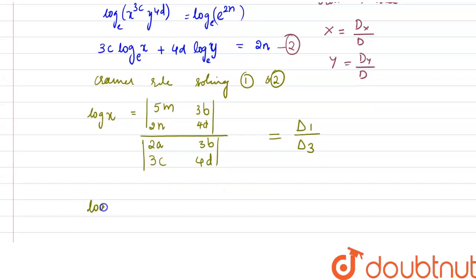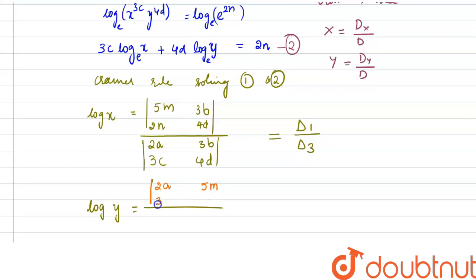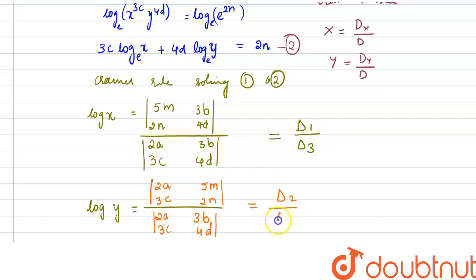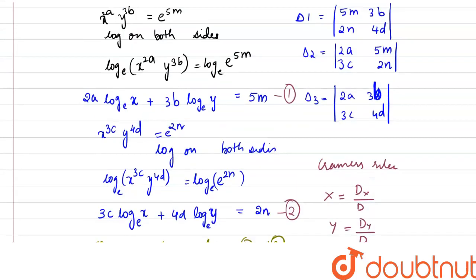Applying Cramer's Rule for log y: the numerator determinant has entries 2a, 5m, 3c, 2n, and the denominator is 2a, 3b, 3c, 4d. This is δ2 divided by δ3. So log y = δ2/δ3.